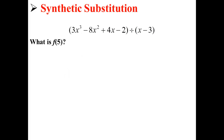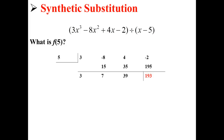Let's say we have our original equation, but instead of dividing by x minus 3, we're now going to divide by x minus 5. What is f of 5? Here, we simply perform another synthetic division. In this synthetic division, we get a remainder of 193. So f of 5 should be 193.